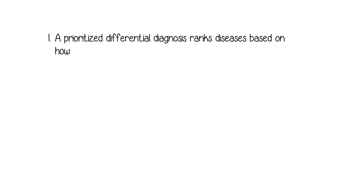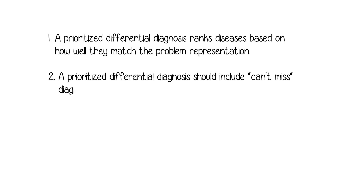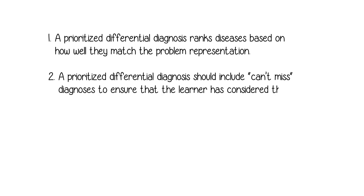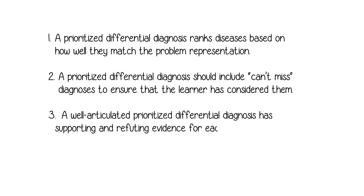In summary, a prioritized differential diagnosis ranks diseases based on how well they match the problem representation. It should include can't-miss diagnoses to ensure that the learner has considered them. A well-articulated prioritized differential diagnosis has supporting and refuting evidence for each diagnosis.